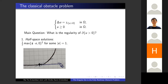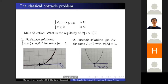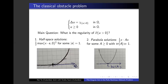Another class of solutions is even simpler: it's just a full parabola. To make sure your function is non-negative, you need the coefficient matrix A to be non-negative definite. And to make sure you solve Laplace of U equals one in the positive set, you need the trace of A to equal one. These are the so-called parabola solutions.